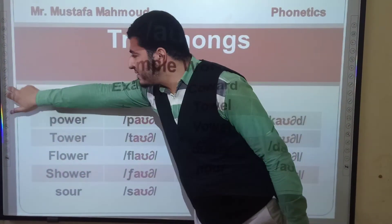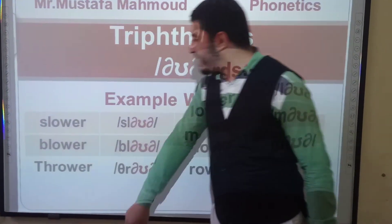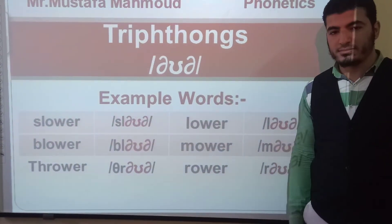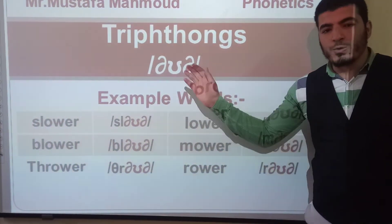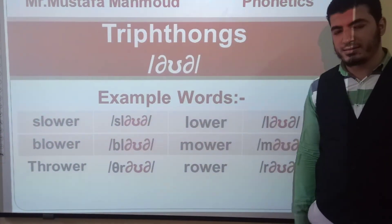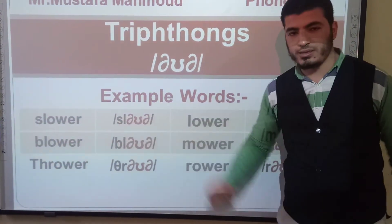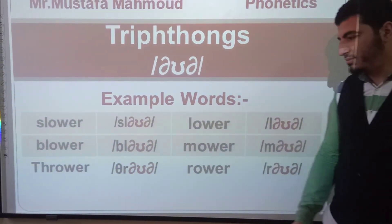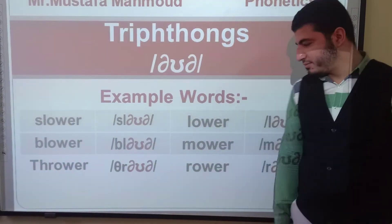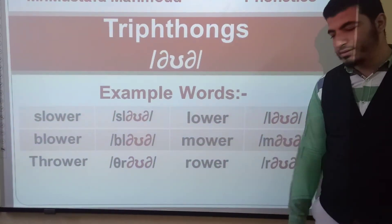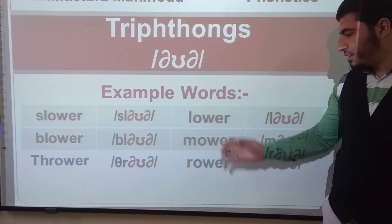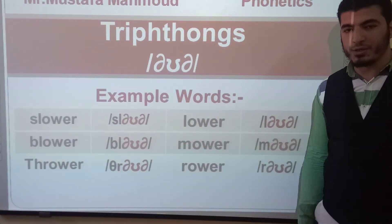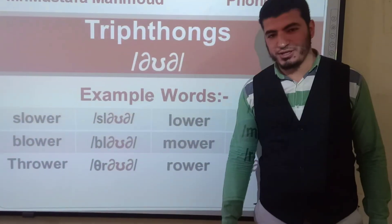We have the last triphthong here, which is pronounced /əʊə/, as in slower, lower, more, and row. Thanks for watching.